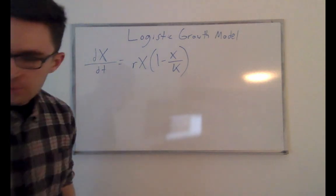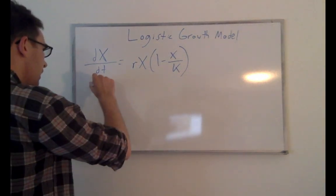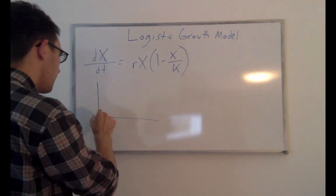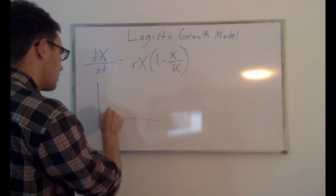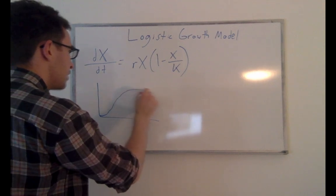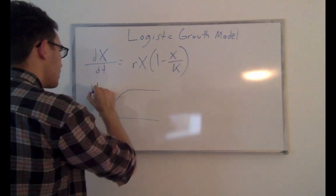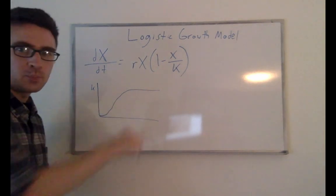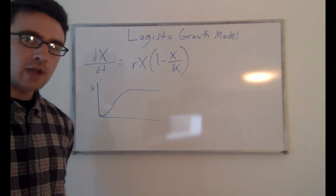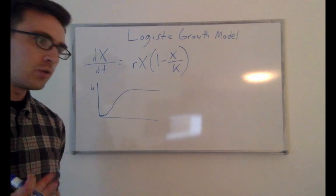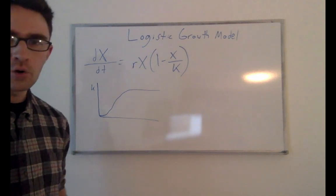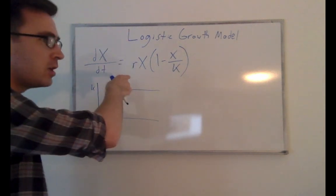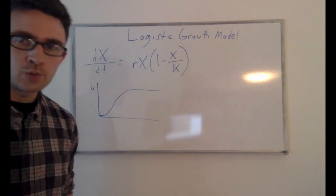It's a pretty simple model. If you start off with one cell, it kind of starts growing almost exponentially, and then it flattens out around the carrying capacity K. The challenge for this video is that we're going to use the Markov chain Monte Carlo method to fit this ODE model to some actual dataset.